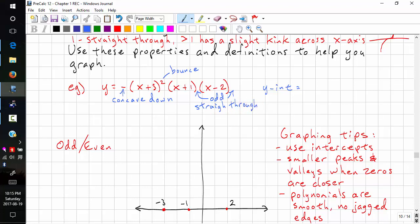The y-intercept, we have the negative sign, we have 3 squared, and we have 1, and we have negative 2. So this gives us a y-intercept of 18. There's two negative signs. This negative sign is not part of the squared.